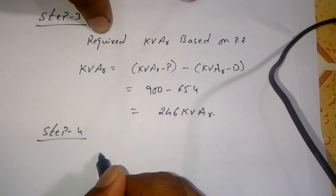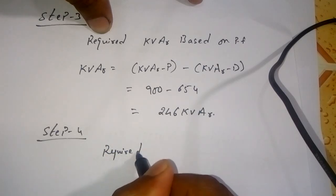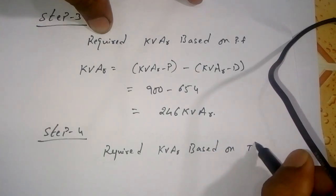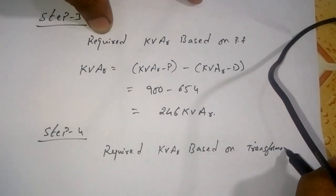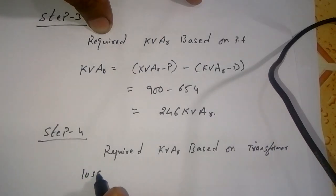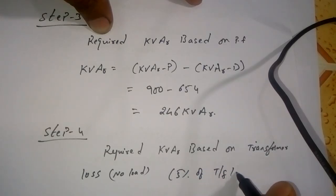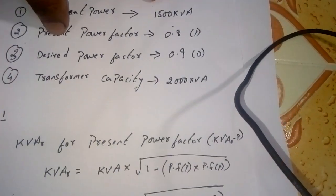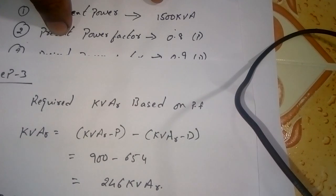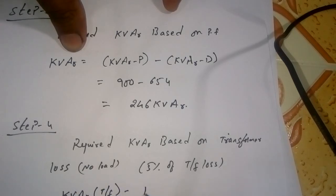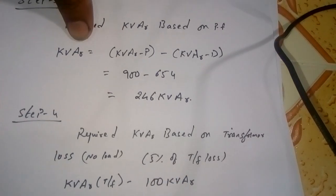Step 4: Find out the required KVAR based on transformer losses — specifically no-load losses. We consider 5% of the transformer capacity as the transformer loss. The transformer capacity is 2000 kVA, so 5% of 2000 gives 100 kVAR.